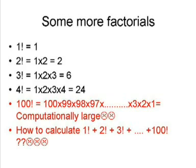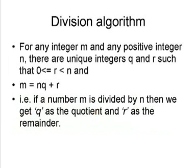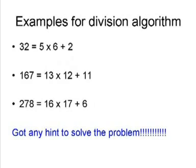We're going to solve the problem using the division algorithm. For any integer m and positive integer n, there are unique integers q and r such that m = n × q + r. That is, if m is divided by n, then we get a quotient q and r as the remainder.